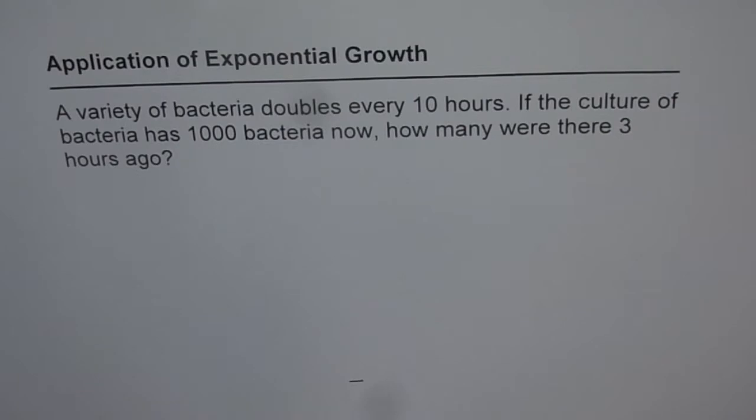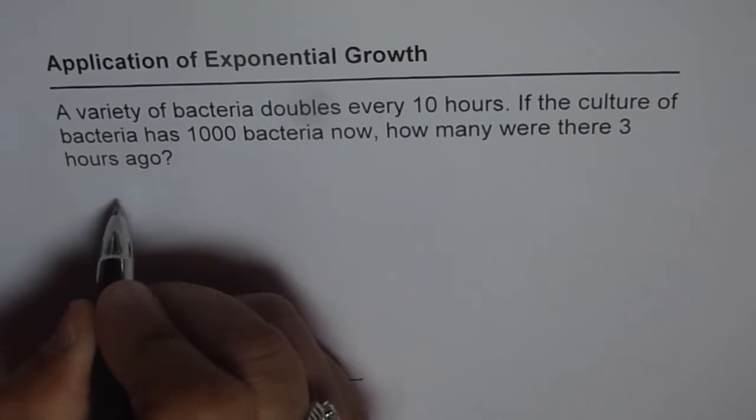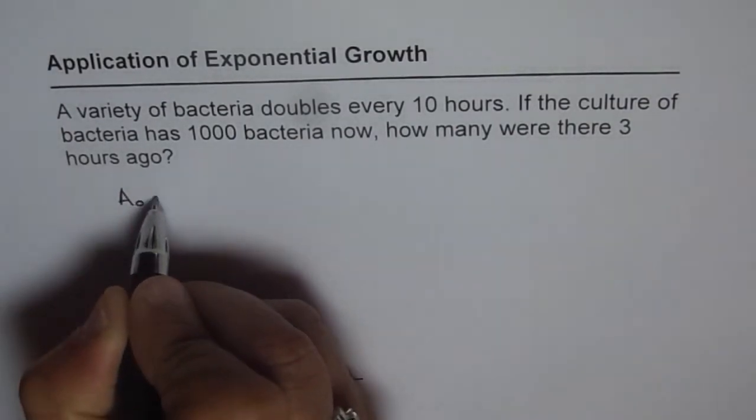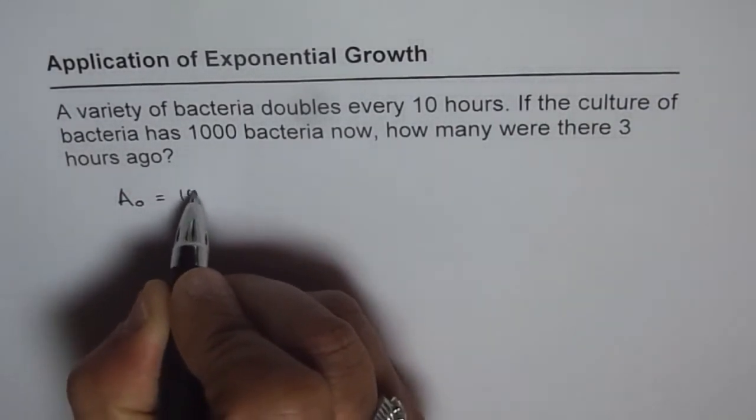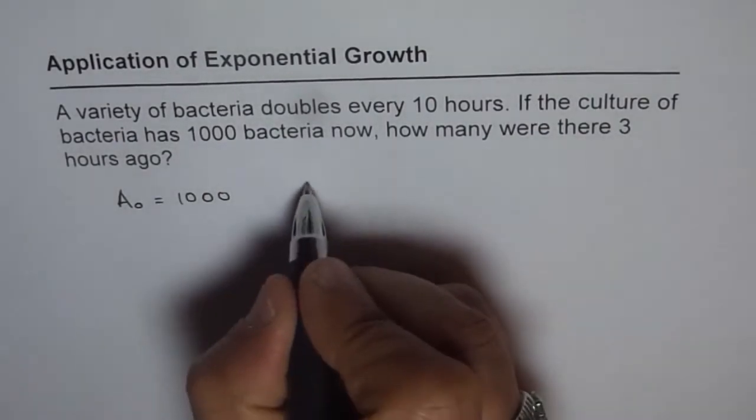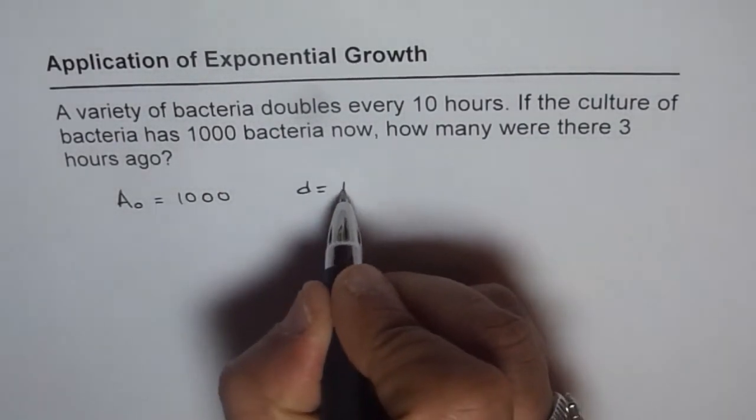What we know here is how many bacteria are present now. Let us say the bacteria present is A0 which is equal to 1000, and doubling time D is 10 hours.